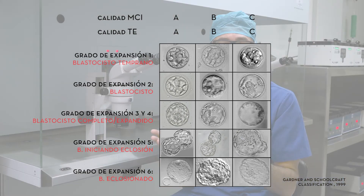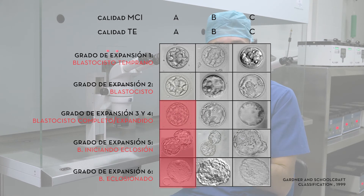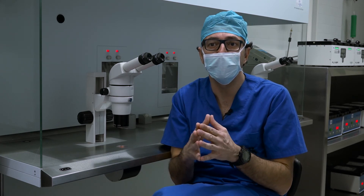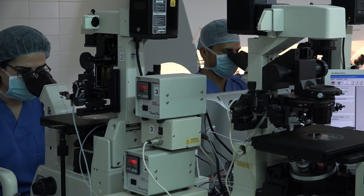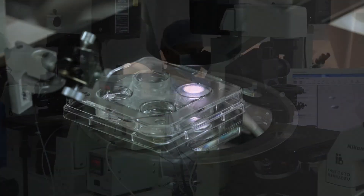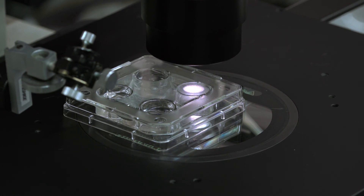The best gestation rates are obtained by transferring blastocysts that are quality 4AA or higher. Apart from a comparison of blastocyst morphology, other morphological criteria for choosing one blastocyst over another can be taken into account. These include the thickness of the external layer, the presence of signs of eclosion, and embryo quality during the previous stages. Embryologist training is key to classifying blastocysts correctly and always transferring the embryo with the greatest ability to lead to gestation.